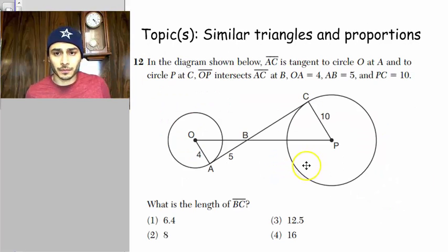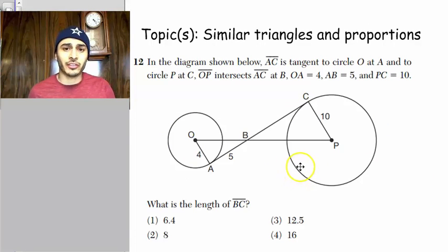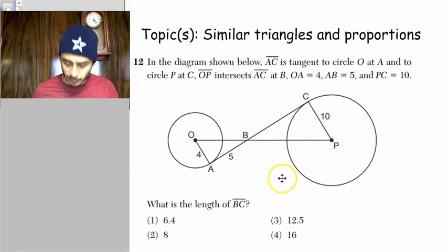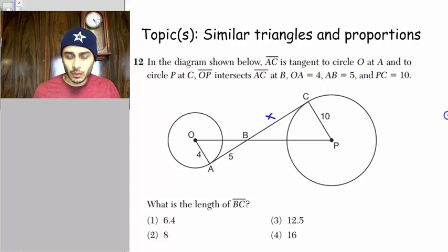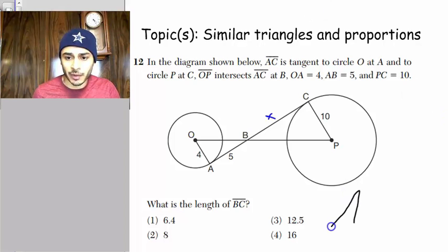All right, number 12. So this is a similar triangles and proportions type of question. In order for us to find the length of BC, we need to find this length first. So these triangles here are actually similar triangles. I'm going to just go ahead and draw them separate.